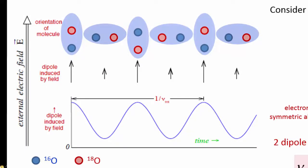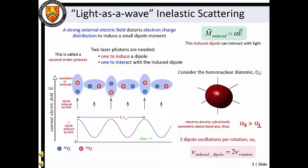For example, consider the rotational motion of a homonuclear diatomic molecule. If the molecule is aligned along the applied electric field, its electronic distribution can be polarized to a greater extent than if it were aligned perpendicular to the field. This is referred to as polarizability anisotropy. Thus, as the molecule rotates, the induced dipole moment oscillates sinusoidally at twice the rotational frequency.